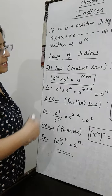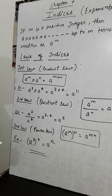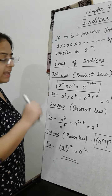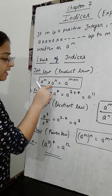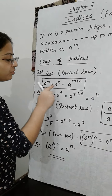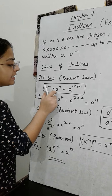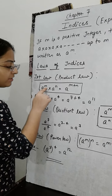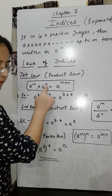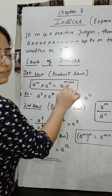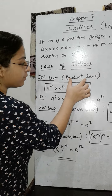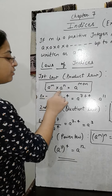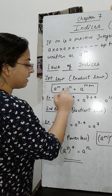There are certain laws of indices. The first is the Product Law. This law says that if there are two terms whose bases are the same and powers are different, and these two terms are multiplied with each other, then the base will remain the same and their powers will be added. So a raised to the power m into a raised to the power n is equal to a raised to the power m plus n.